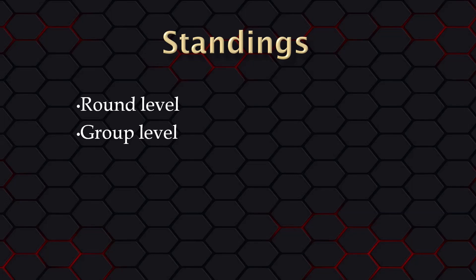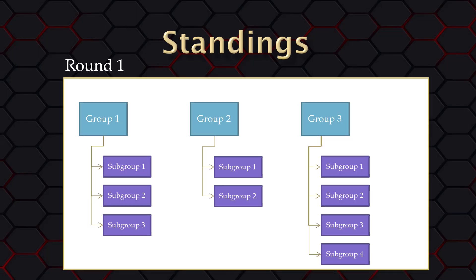If using subgroups, you can view the standings down to the subgroup level. The software will rank all racers in a subgroup from first to last. You can base your speed awards on any of these three levels. Here is a diagram showing those standings levels. You can view the standings for any of these groups, subgroups, or all of them together, which is the round standings.